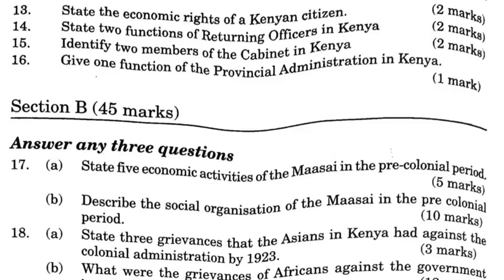Section B, 45 marks. Question 17a: List five economic activities of the Maasai in the pre-colonial period. One, they practiced pastoralism. Two, they traded with their neighbors. Three, they practiced iron working. Four, the Kwavi (Il-Chamus) practiced agriculture. Five, they raided cattle from neighboring communities. Six, they practiced hunting and gathering.